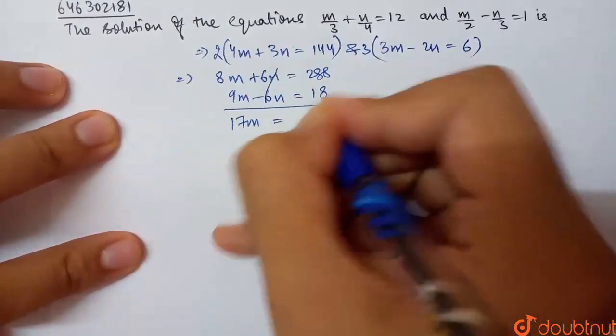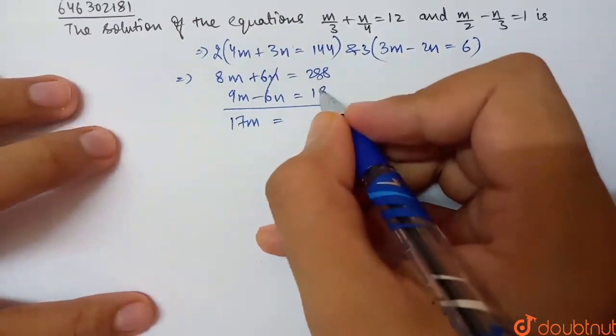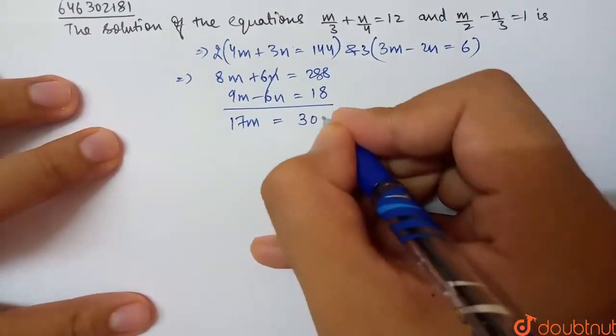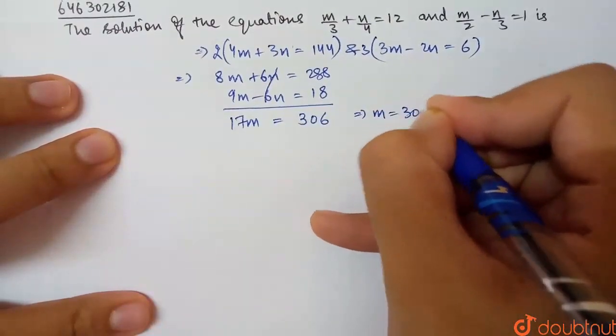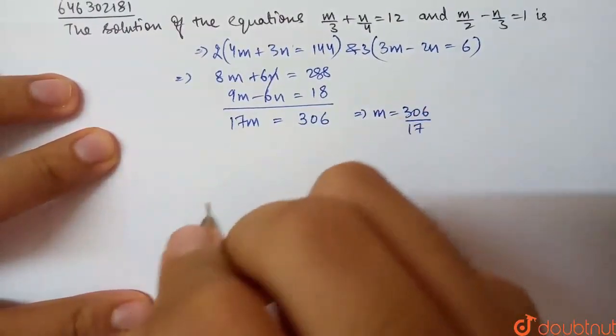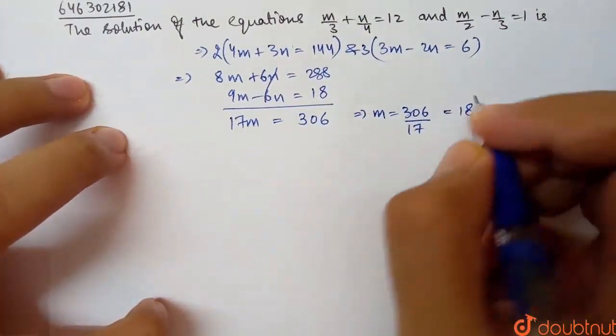So 17m = 288 + 18. Now, 288 plus 18 is 306. Therefore, m = 306 ÷ 17, which equals 18. So the value of m is 18.